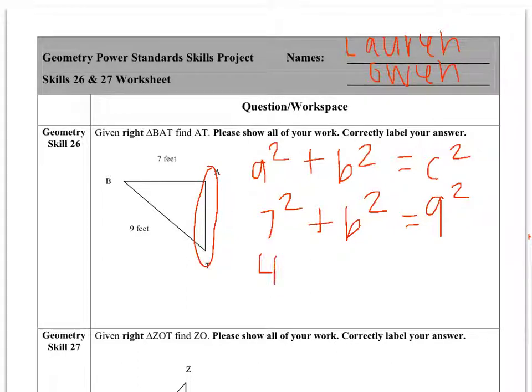7 squared is 49 plus B squared, because we still don't know that yet, equals 9 squared, which is 81.